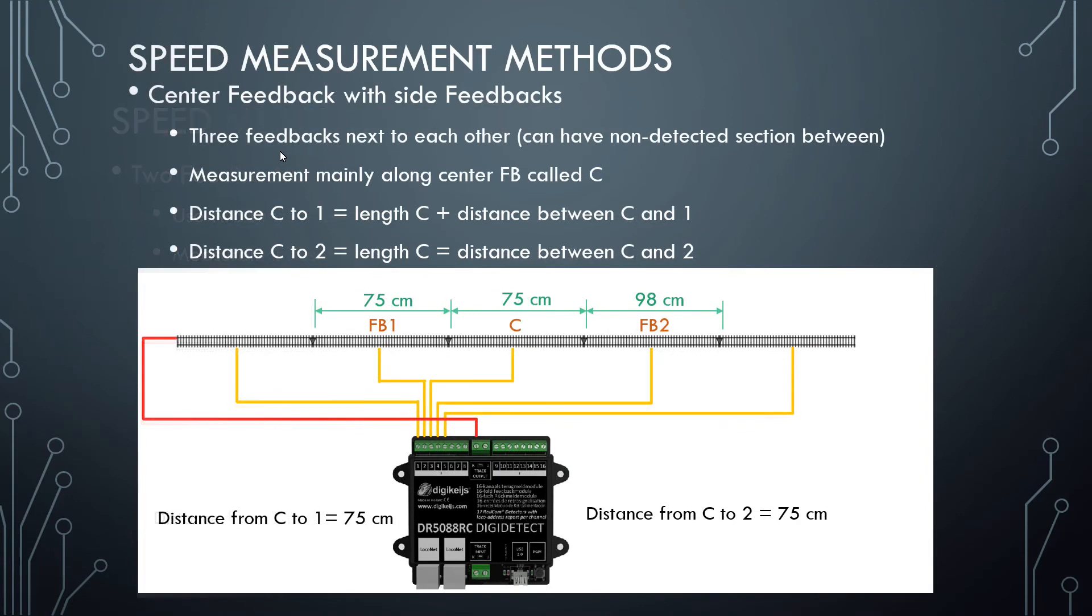The third method you can use is called center feedback with side feedbacks. And this is the method you will see used in Ian's video. It consists of three feedbacks next to each other, and you can have non-detected sections between the feedbacks.